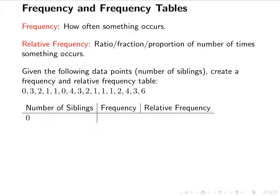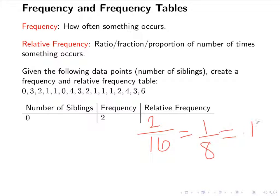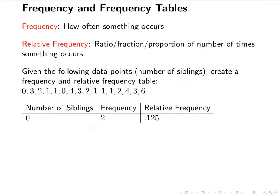The number of zeros is 2, so the frequency is 2. The relative frequency is the ratio — the number that you have divided by the total. So the relative frequency will be 2 over 16, which is 1 over 8. You can leave it as the fraction, or you can put it as the decimal, which will be 0.125. For the relative frequency, we take the frequency and divide by the total to get 0.125.